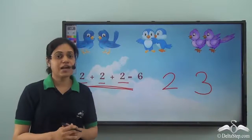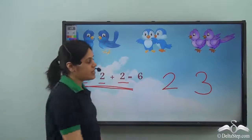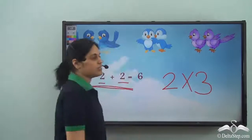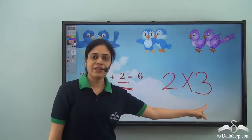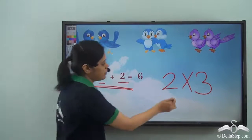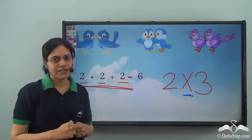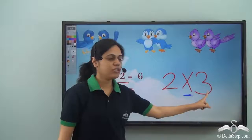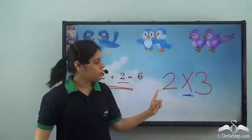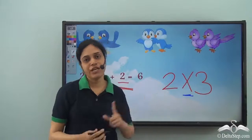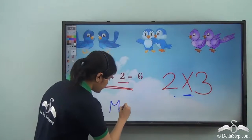There is another way to write this. Two added three times can be written as two, then this symbol, then three. This symbol looks like a cross or an x — so two cross three. This stands for two added to itself three times. So this is the multiplication symbol.